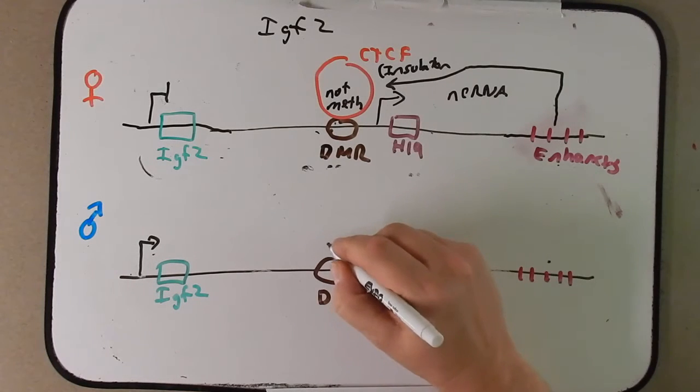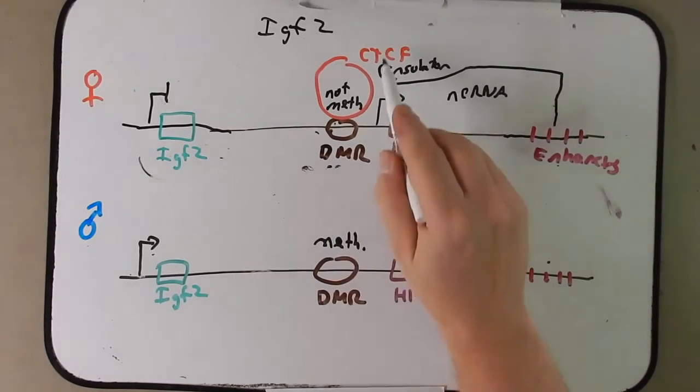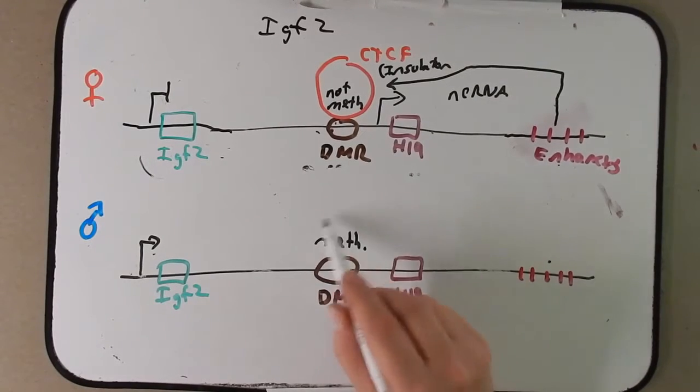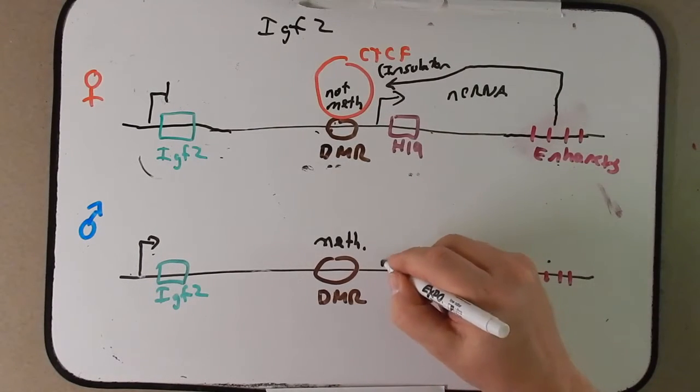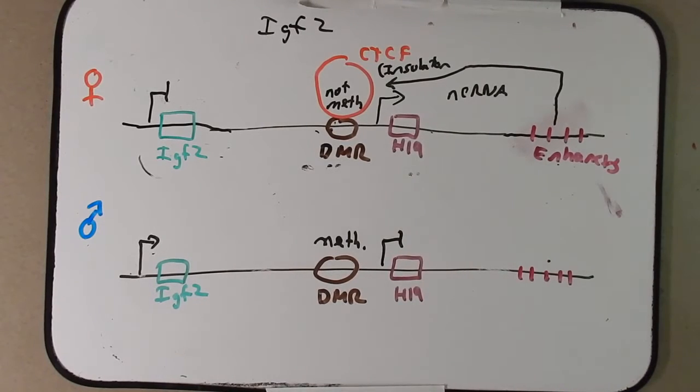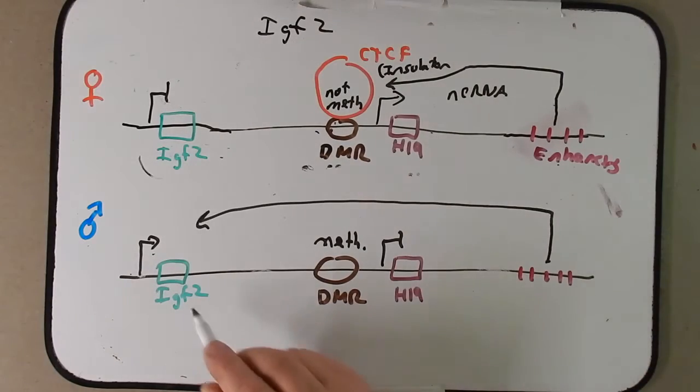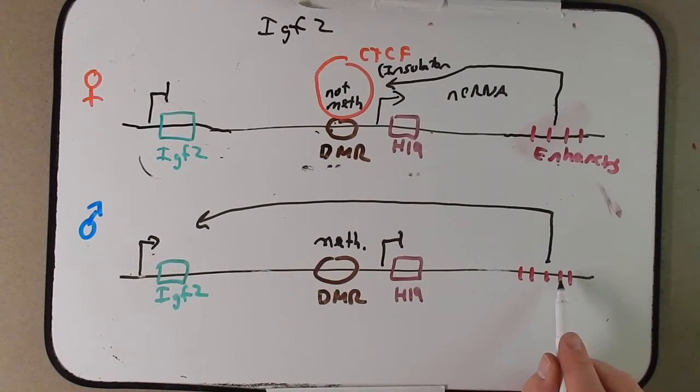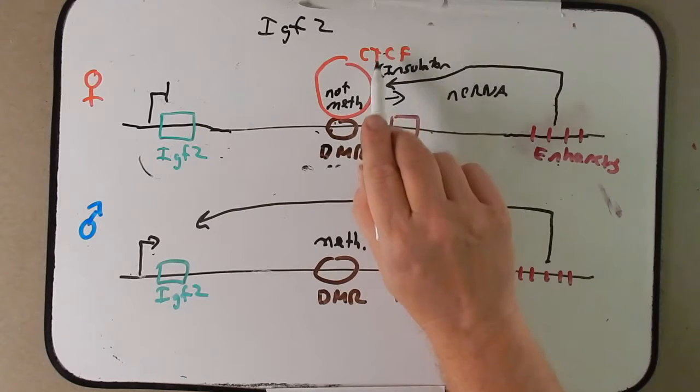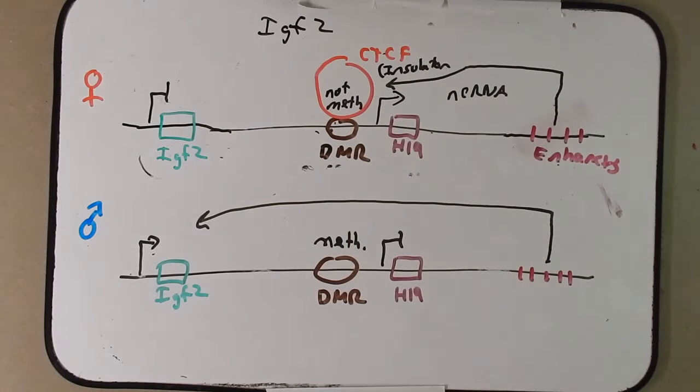Well, DMR, the differentially methylated region here, is methylated. This prevents the CTCF protein from binding. It being methylated will cause H19 to not be expressed. The enhancers can now help express IGF2. So now we're getting expression from IGF2 because these enhancers, which are way downstream, can exert their effect upon this gene now because they're no longer blocked by this insulator CTCF.